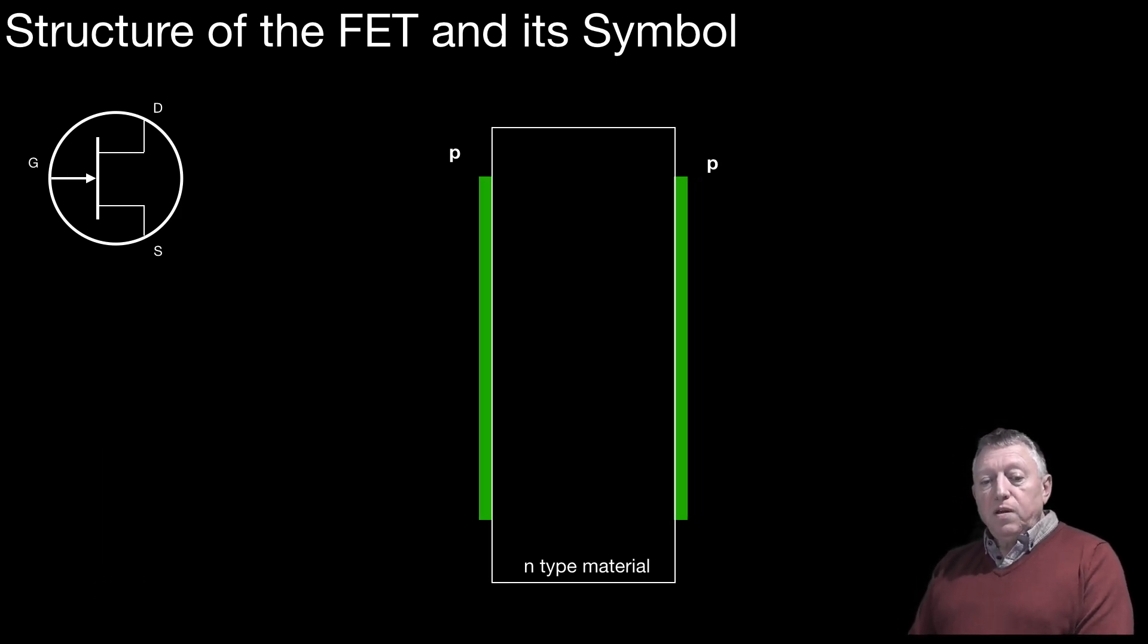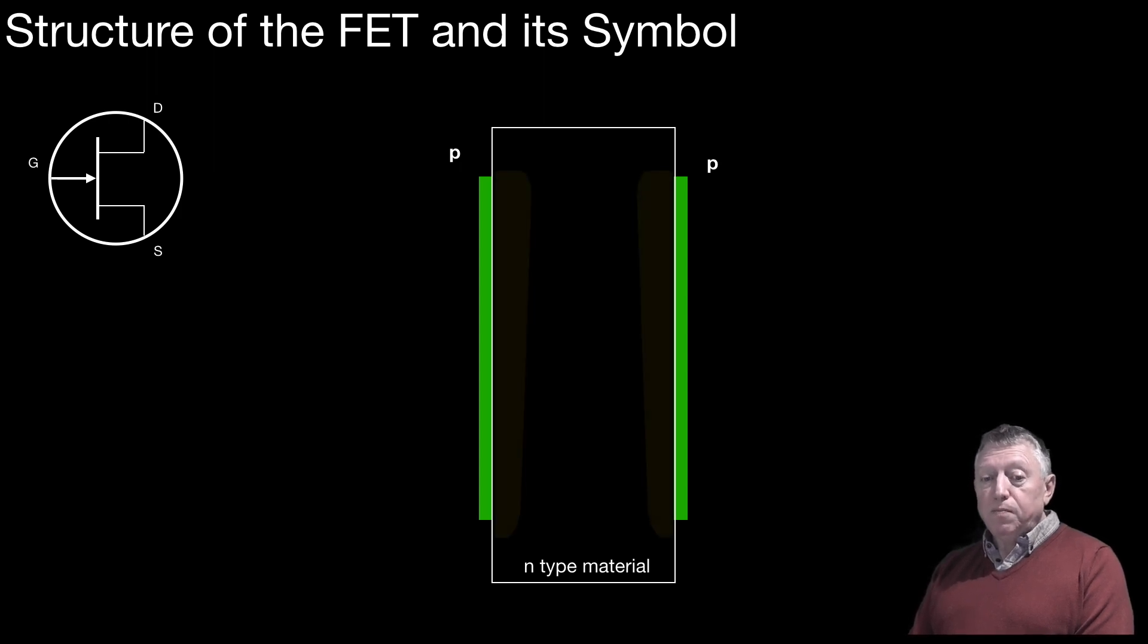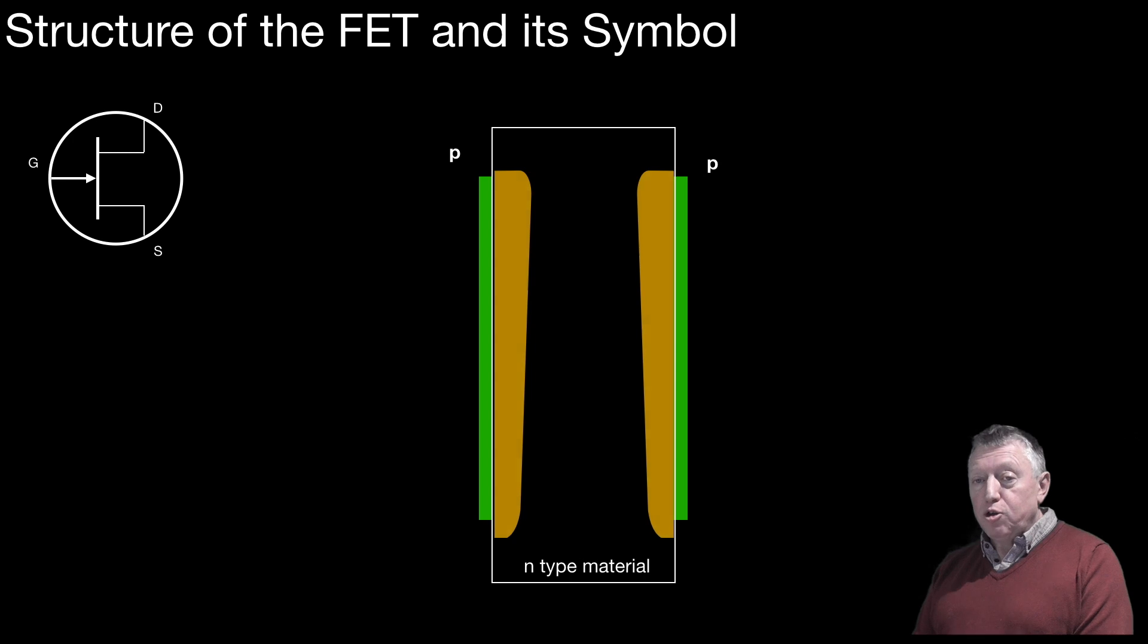So with the FET, because we have essentially a P-N junction, we'll have some depletion layers and they're shown there in yellow. And these depletion layers will form just because the P and the N are next to each other. It's happening in much the same way as we get the depletion layer around the base region of a bipolar transistor.